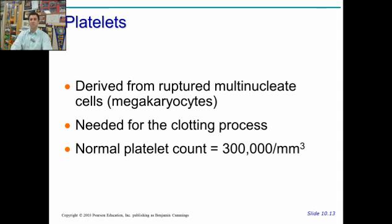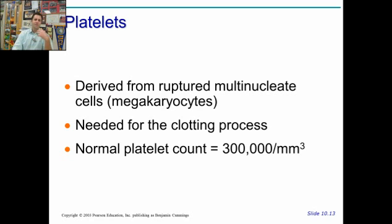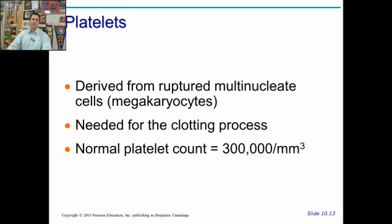Platelets come from a cell called a megakaryocyte. When that cell gets chopped up into pieces, we get our platelets. The original megakaryocyte was a multinucleated cell. Platelets are used for clotting, and your normal platelet count is about 300,000.